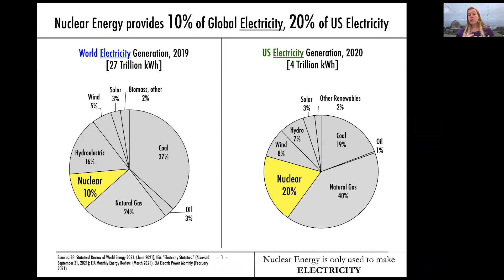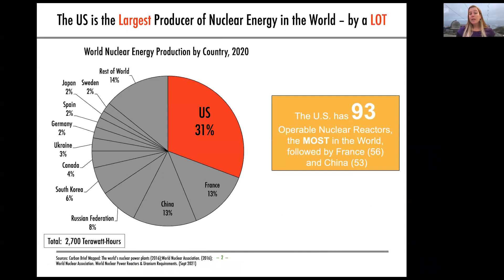Nuclear energy is used solely to produce electricity. It provides 10% of the global electricity mix and 20% of the U.S. electricity mix. But the U.S. is actually the largest producer of nuclear energy in the world by a lot — it produces almost a third of the world's nuclear energy, almost double the next two countries, France and China, both in energy produced and number of reactors.